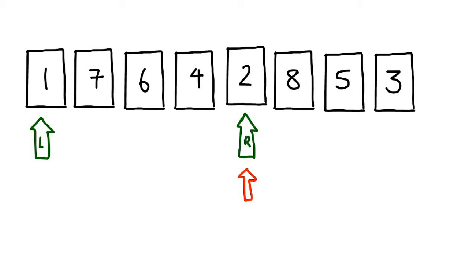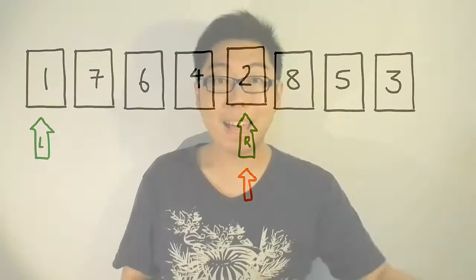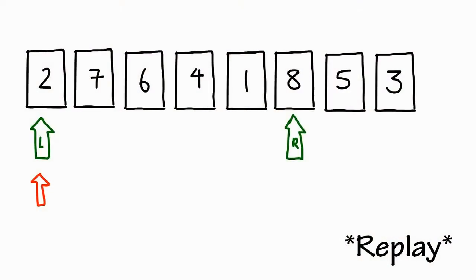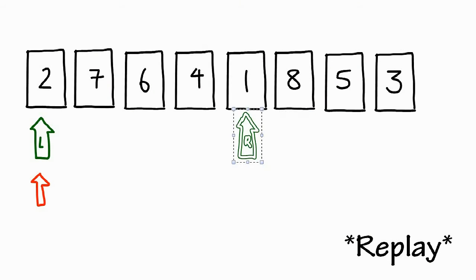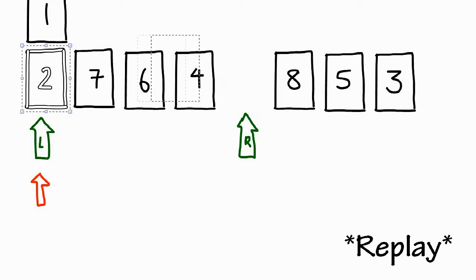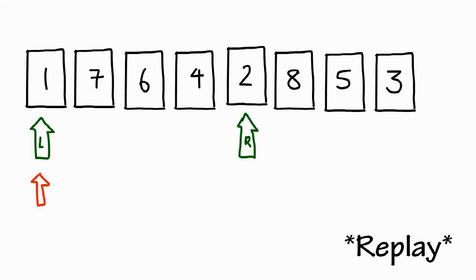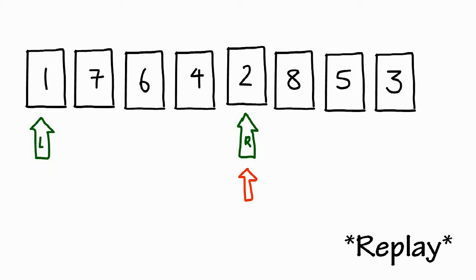However, the left and right pointers stay where they are, resulting in the pivot jumping from the left to the right pointer position. Let me show you this entire step once again: our right pointer moves from eight to one, one and two is swapped, and the pivot jumps from the left pointer to the right pointer.